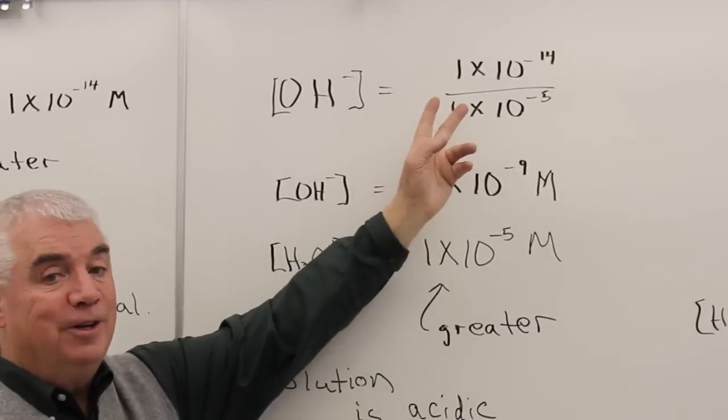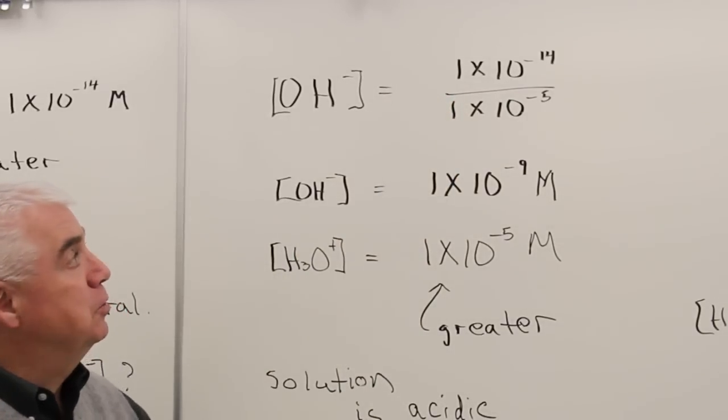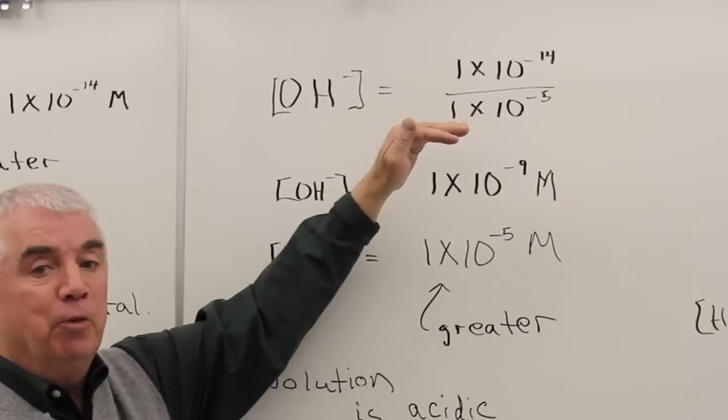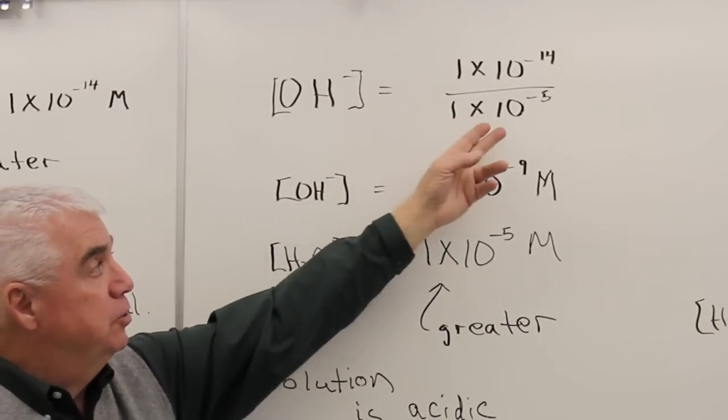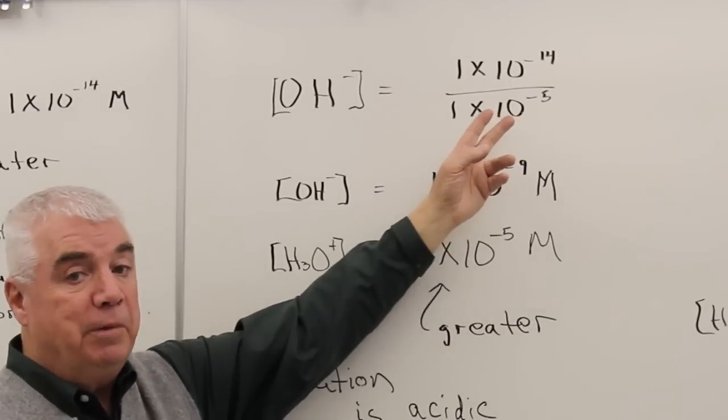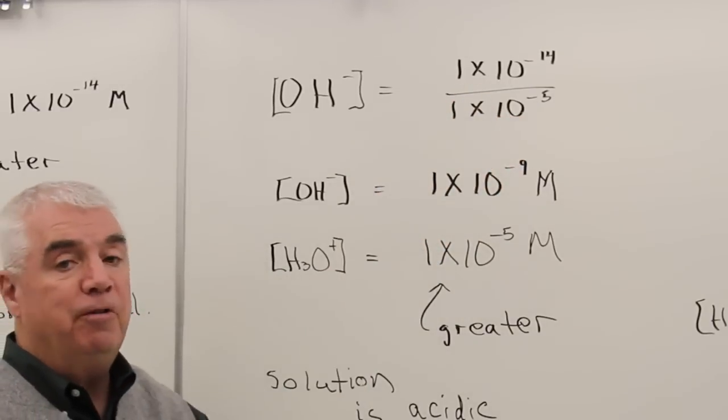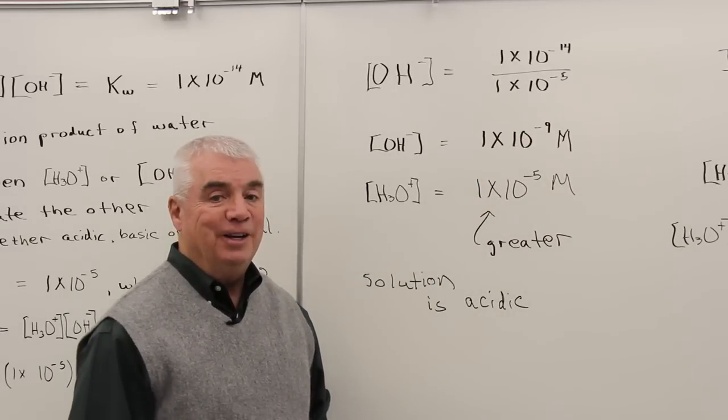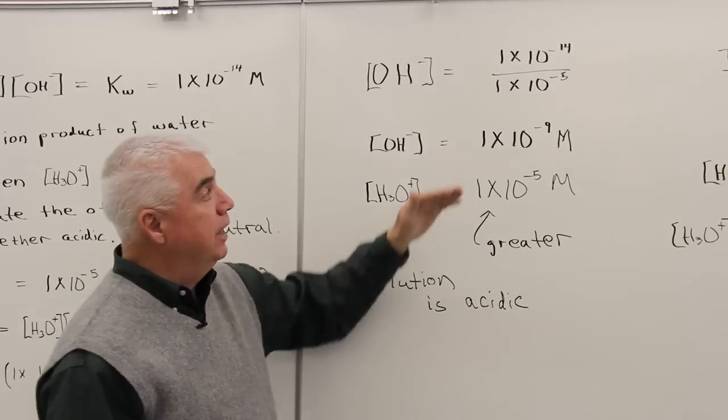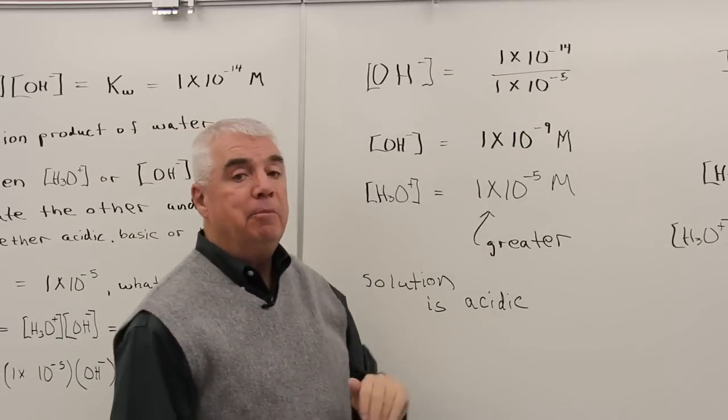You know the rules for dividing exponential numbers. It's the exponent of the numerator minus that of the denominator. So a minus 14 minus a minus 5 would be a plus 5. A plus 5 and a minus 14 would be a minus 9.